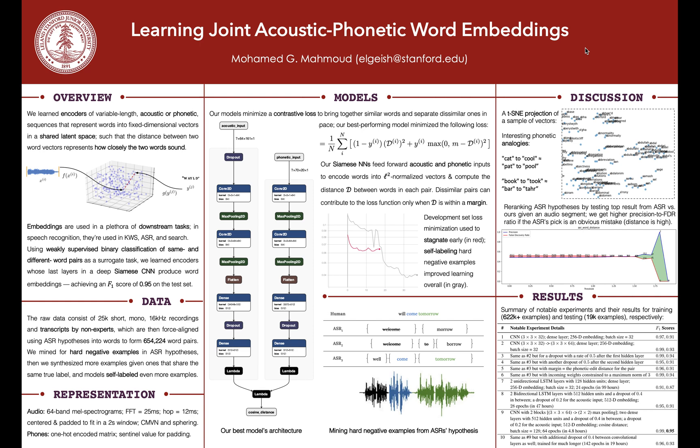Today we'll talk about how to bring together words that sound the same or similar in a shared vector space — joining an acoustic and a phonetic view of words. We will use a weakly supervised binary classification task and feed a Siamese network the acoustic representation and the phonetic representation through a series of transformations to calculate a fixed-length embedding vector.